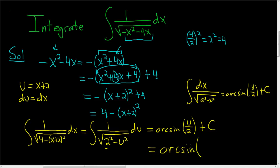So this is the arcsine. And u was right here, x plus 2. So this is (x plus 2) over 2. And then we have our constant c.